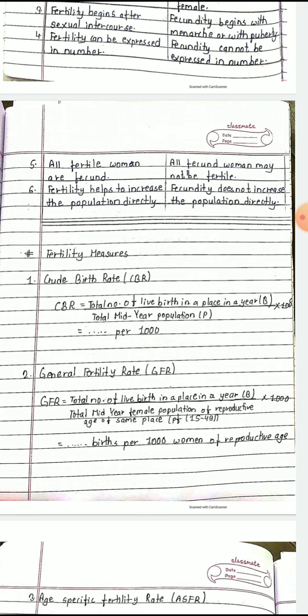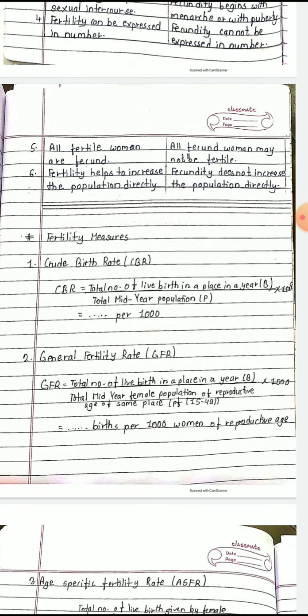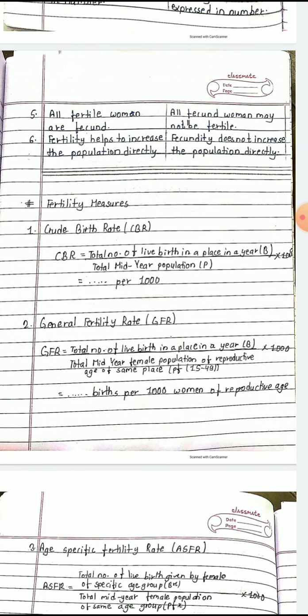General fertility rate (GFR) differs from CBR in that its denominator uses total mid-year female population of reproductive age (15–49), rather than total mid-year population. The formula is: B (total live births) divided by P(15–49) (mid-year female population of reproductive age), multiplied by 1000. GFR is a far better measurement of fertility than crude birth rate.